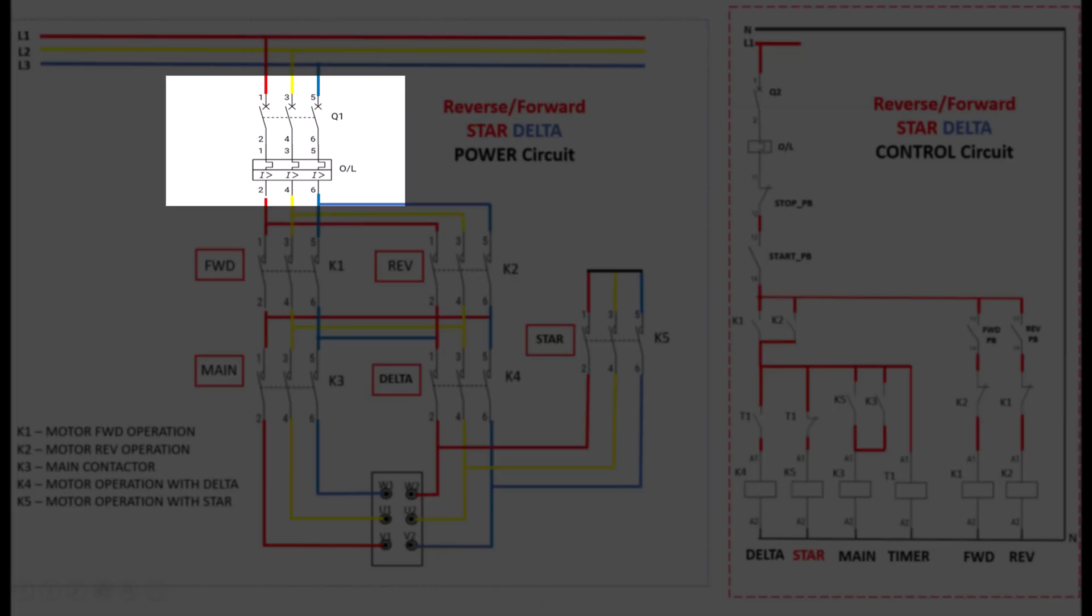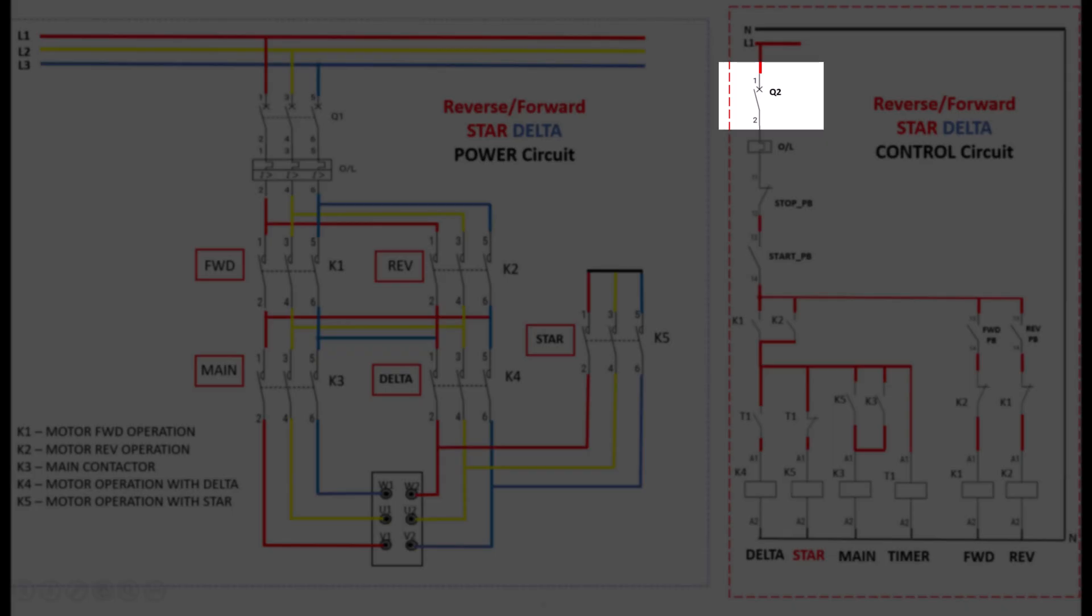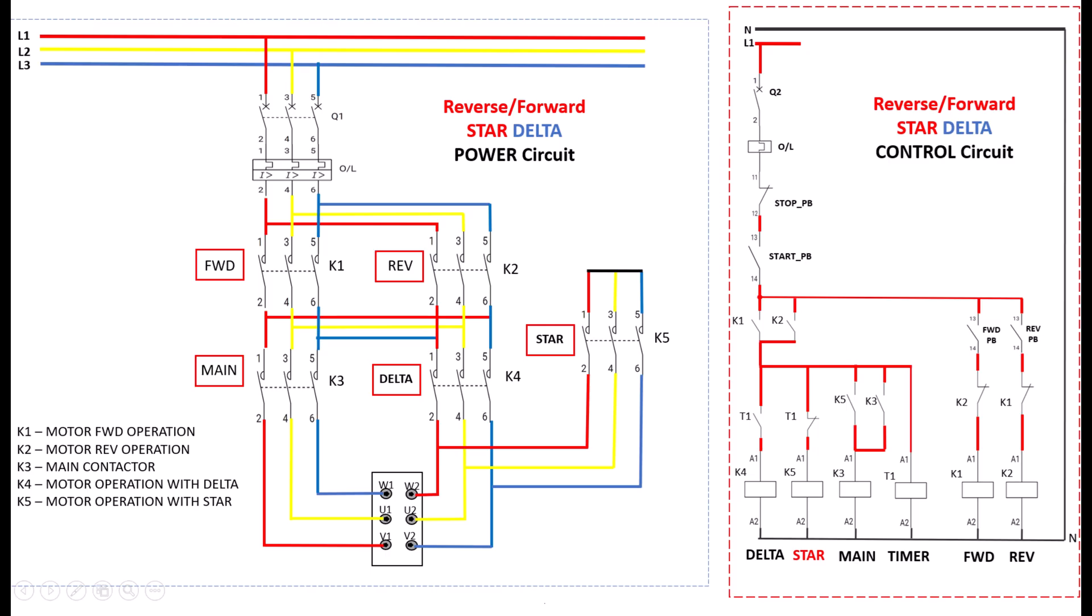Q1 power breaker. It's the three-phase power provider for the motor. Overload relay. Think of this as your safety shield. It protects the motor from overheating or excessive current by tripping when things go wrong. Q2 control breaker. This keeps the low-voltage control circuit safe, isolating it from the high-power circuit. With that in mind, let's break this system down into two essential circuits.